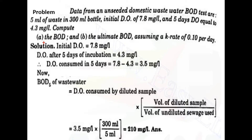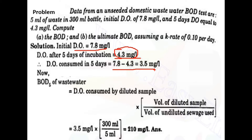We need to find the 5-day BOD and the ultimate BOD. The initial DO is 7.8 mg per litre and the DO after 5 days incubation is 4.3 mg per litre. So the DO consumed is 7.8 mg per litre minus 4.3 mg per litre, which equals 3.5 mg per litre.